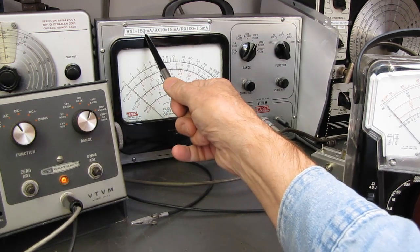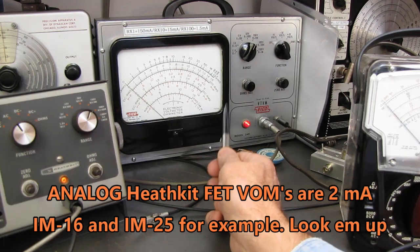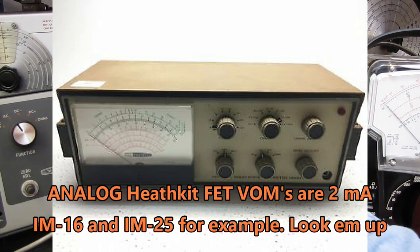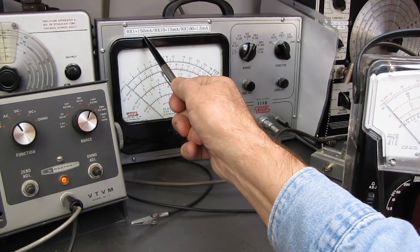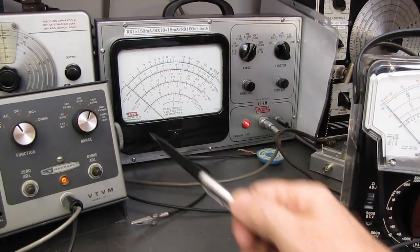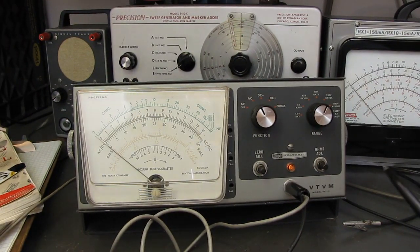This meter, 150 milliamp years on R times 1. Even though this is a 10 mega ohm VTVM on the ohm scale, it passes a lot of current. 150 milliamp years. That's still enough to blow a 100 milliamp year fuse. So you'd want to go to the R times 10 or the R times 100 scale to test those fuses to be safe. So we're going to do the same thing to this meter.